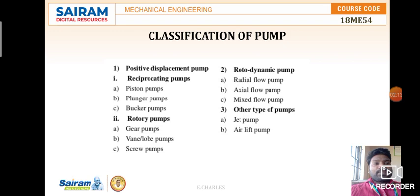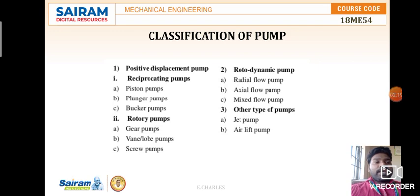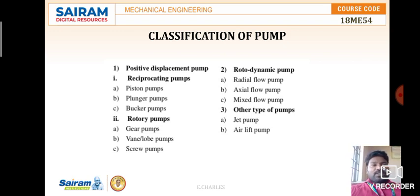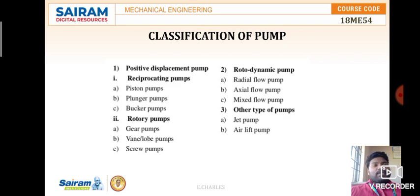The second main category is the rotodynamic pump. Examples include radial flow pump, axial flow pump, and mixed flow pump. Based on the direction of flow, they are named accordingly. If the flow is in the radial direction, it is a radial flow pump. If the flow is axial, towards the shaft, it is an axial flow pump. If it has flow entering the impeller in one direction and leaving in another axis, it is called a mixed flow pump.